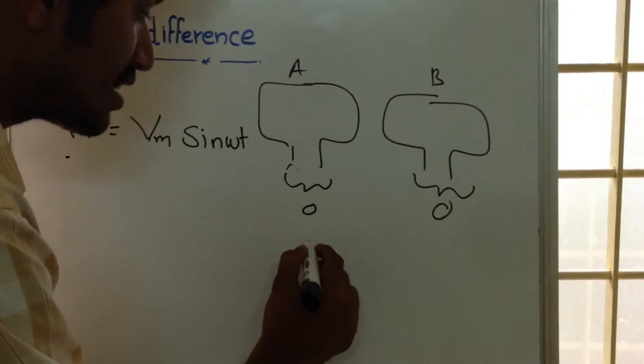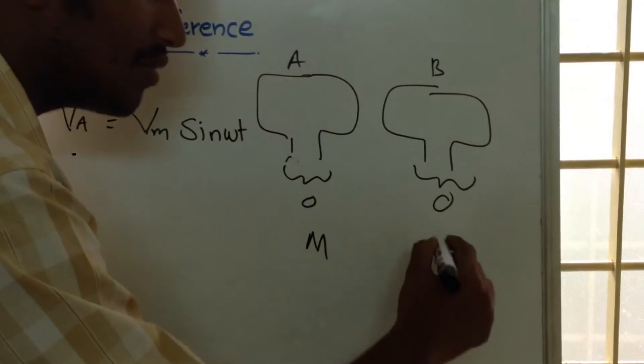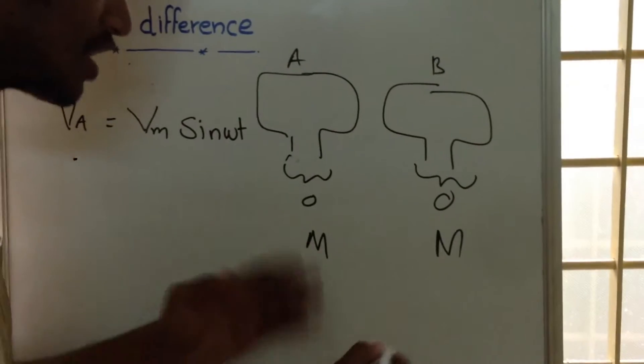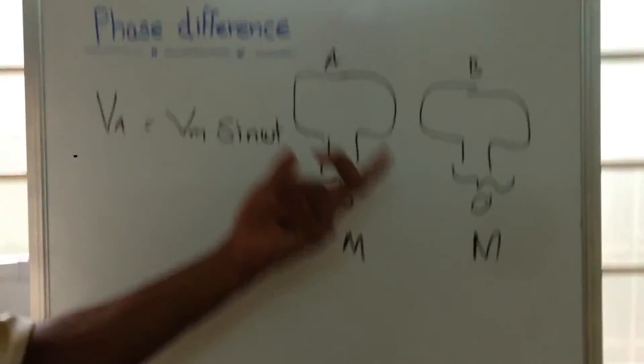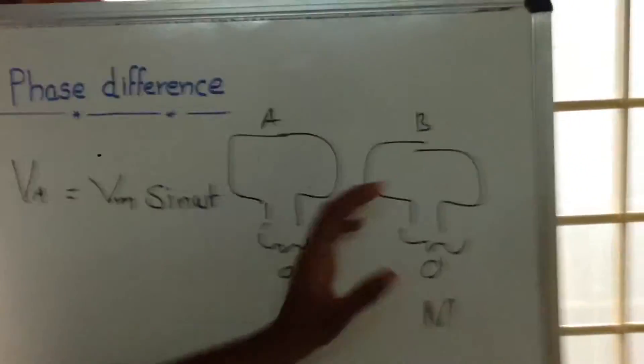this will be reaching maximum and the second coil will also show maximum and it will continue like that. Then we will say that A and B are in phase, that means there is no phase difference between these two voltages.